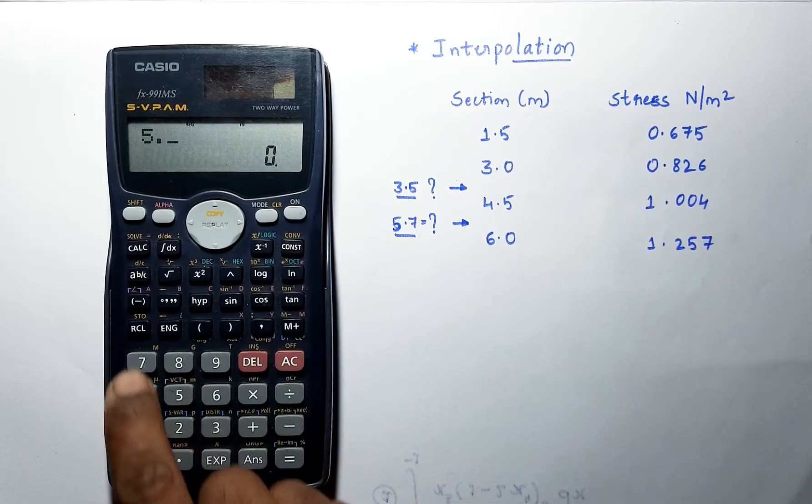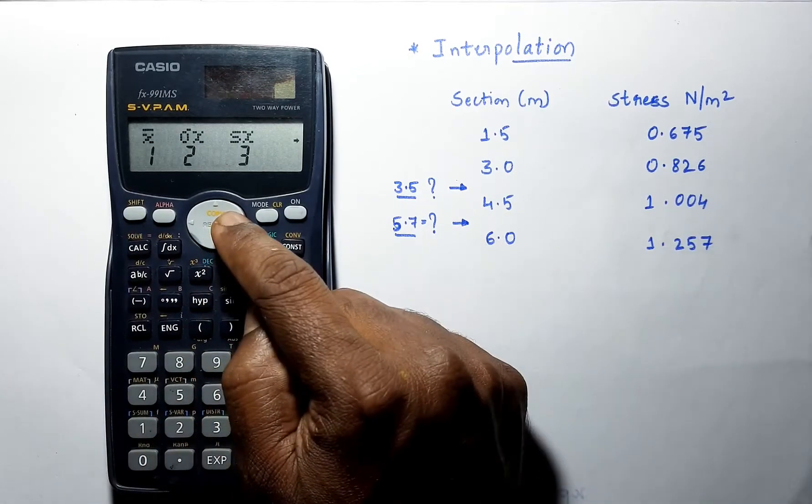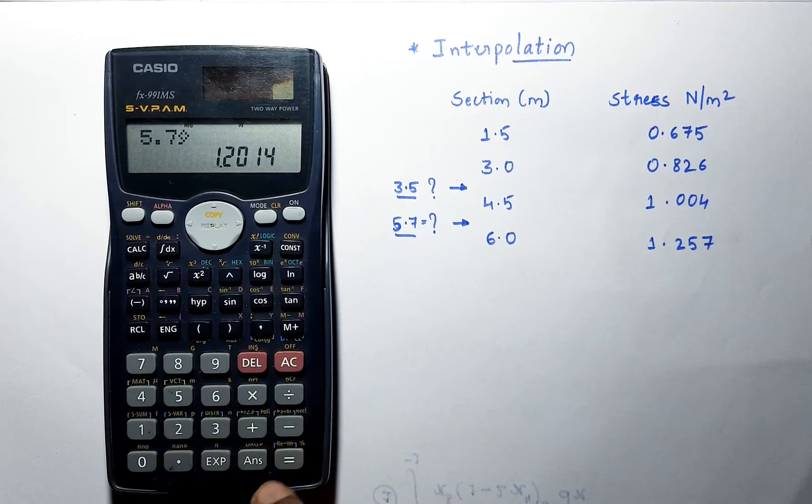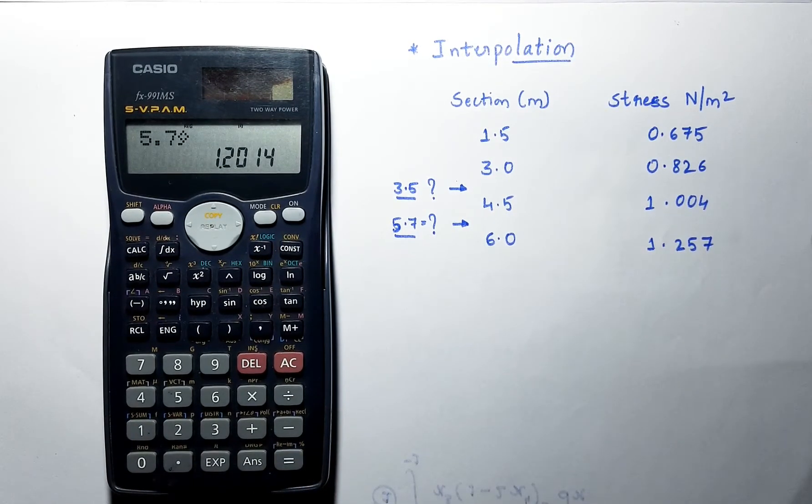Now press 5.7. Again press shift 2 and select this symbol. Now we are getting the value for 5.7.